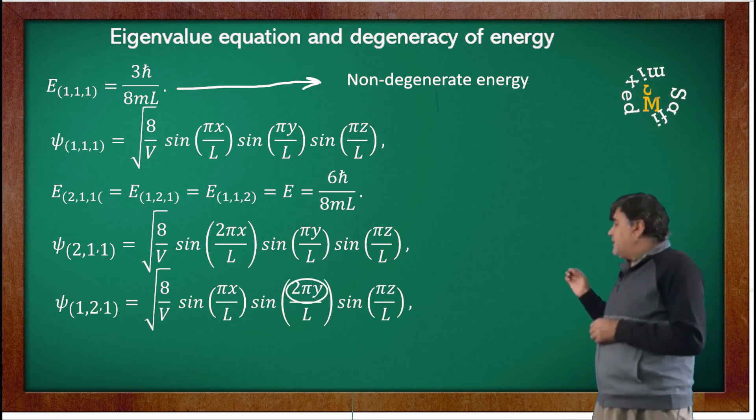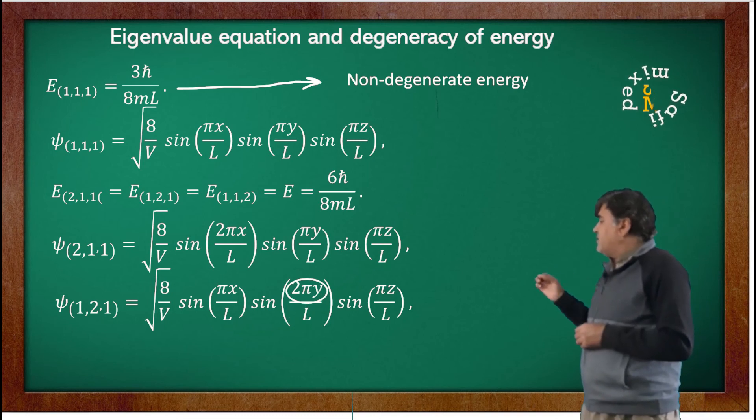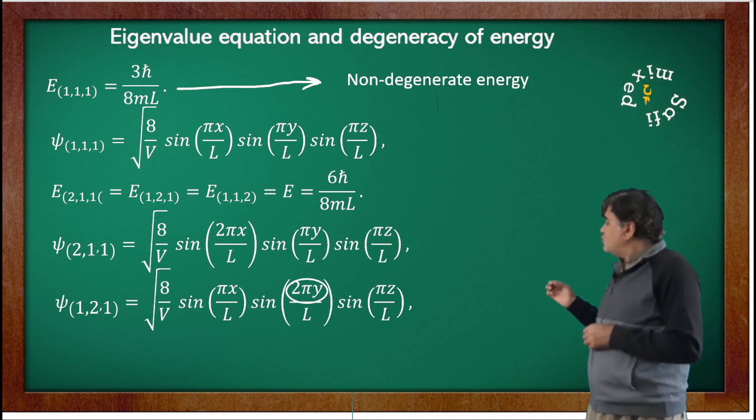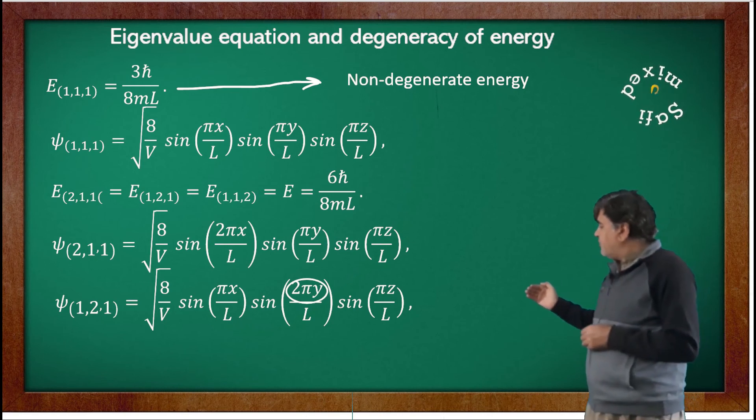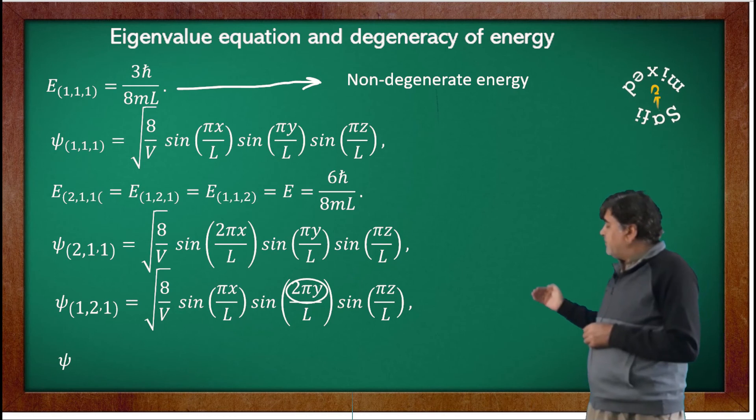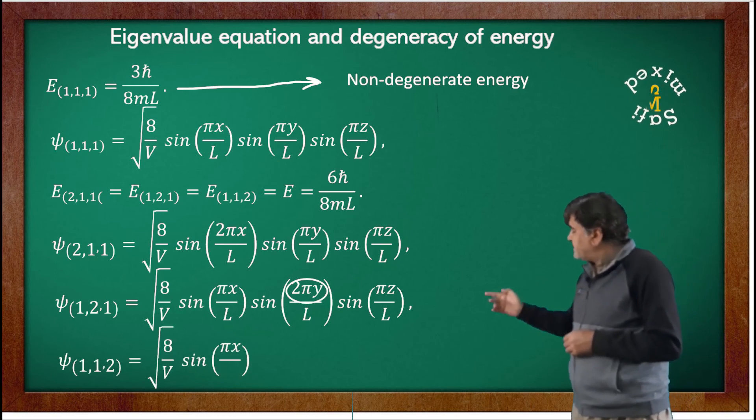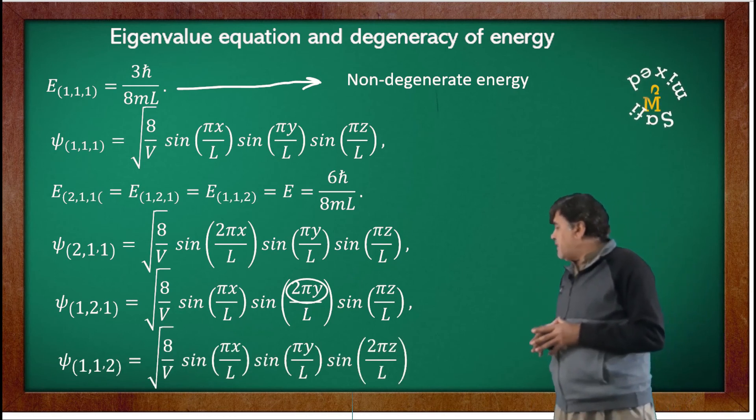That is, we write sin(2πy/L). And similarly for the third wave function, ψ_{1,1,2}, we multiply 2 with the z part of the sine function.